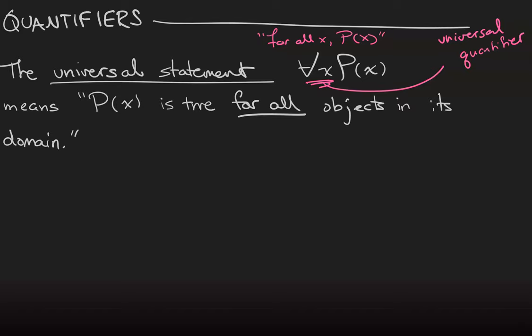So here is an example. If P(x) is the predicate from the last video x plus 2 is equal to 4, and the domain is the integers, then the universal statement says every integer plus 2 is 4, and of course that is false.